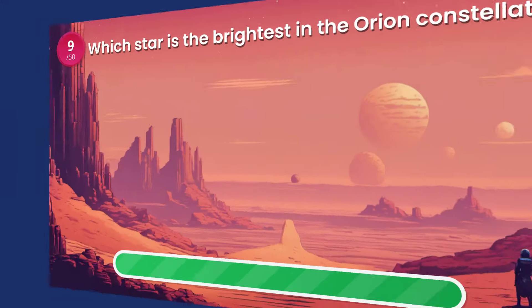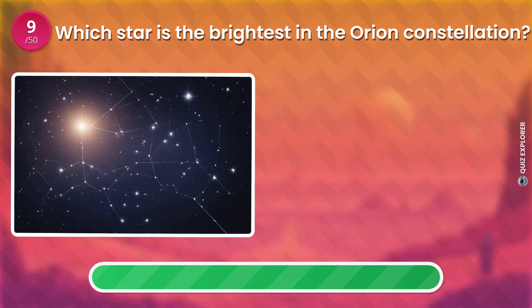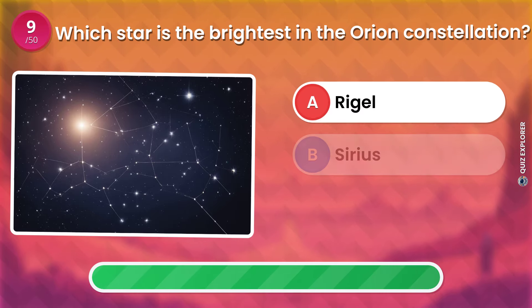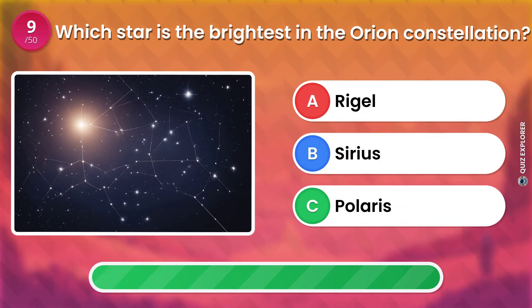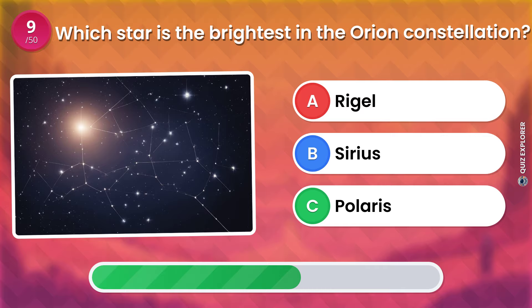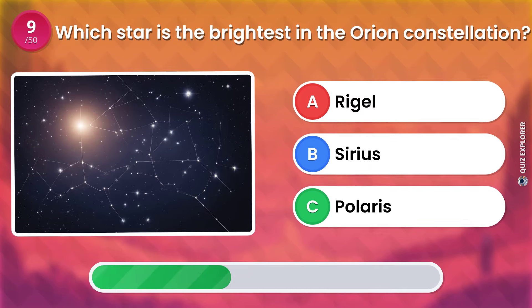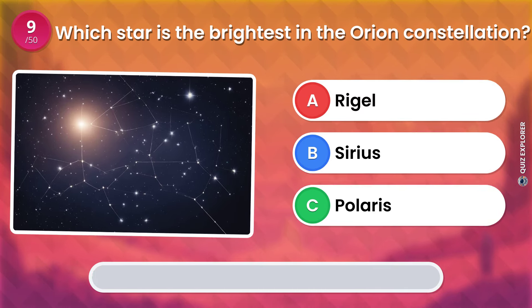Which star is the brightest in the Orion constellation? Rigel. Sirius. Polaris. The answer is: Rigel.